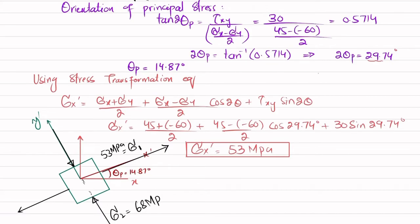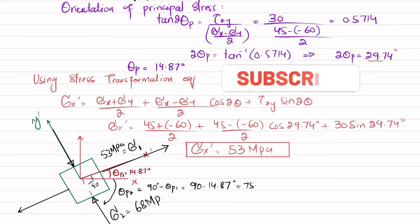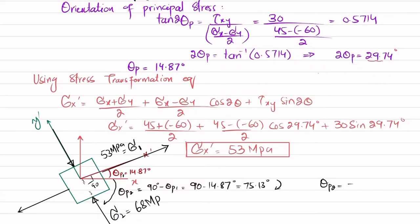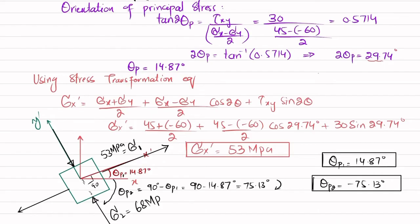The total angle between principal planes is 90 degrees. So theta_p2 = 90 − theta_p1 = 90 − 14.87 = 75.13 degrees. Since it is in the clockwise direction, theta_p2 = minus 75.13 degrees. Theta_p1 = +14.87 degrees, where the positive sign indicates counterclockwise direction.